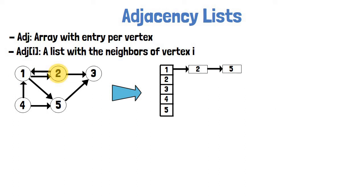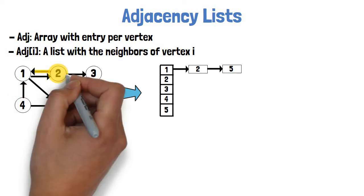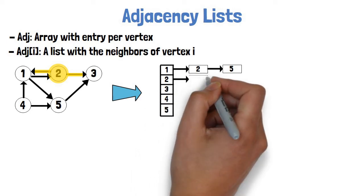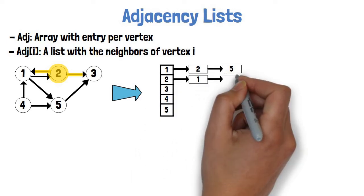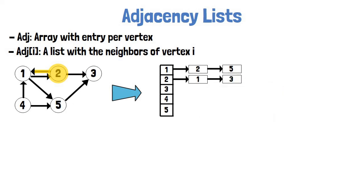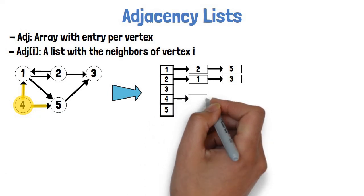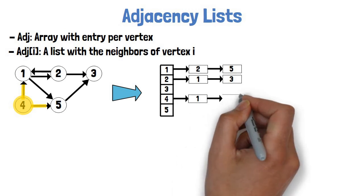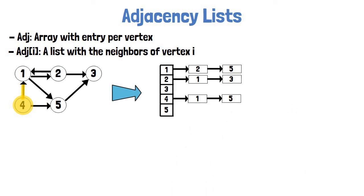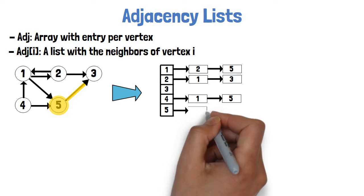Vertex 2 is also the source of 2 edges — to vertex 1 and to vertex 3 — so its adjacency list contains 1 and 3. Vertex 3 has no outgoing edges, so its adjacency list is empty. Vertex 4 has 2 outgoing edges to vertices 1 and 5, so 1 and 5 are in its adjacency list. Lastly, vertex 5 has only one outgoing edge to vertex 3, so vertex 3 is the only vertex in its adjacency list.